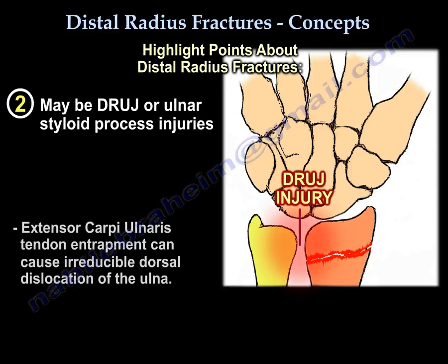Extensor carpi ulnaris and extensor digiti minimi tendon entrapment can occur and can cause reducible dorsal dislocation of the ulna.